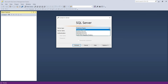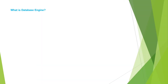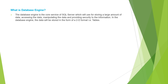Let us move to the presentation and understand the role and responsibility of all these server types. What is Database Engine? The Database Engine is the core service of SQL Server, which we use for storing a large amount of data, accessing the data, manipulating the data, and providing security to the information. In the Database Engine, the data is stored in the form of a 2D format, i.e. in the form of a table.